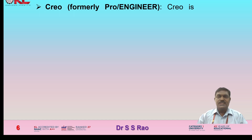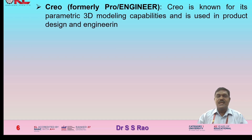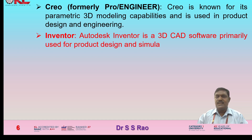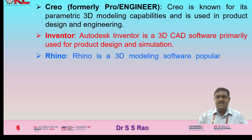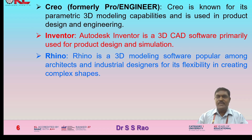Creo, formerly Pro-Engineer, is known for its parametric 3D modeling capabilities and is used in product design and engineering. Autodesk Inventor is a 3D CAD software primarily used for product design and simulation. Rhino is a 3D modeling software popular among architects and industrial designers for its flexibility in creating complex shapes.